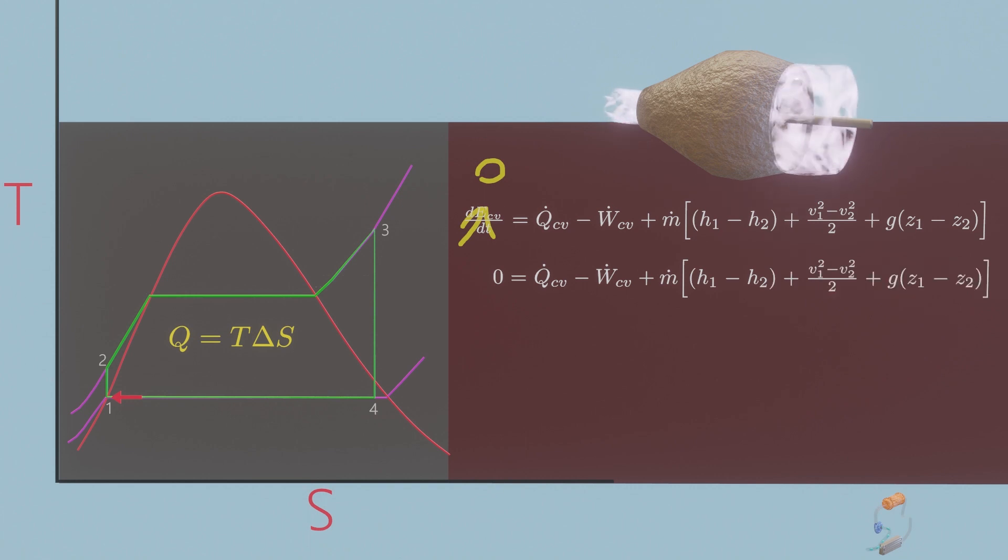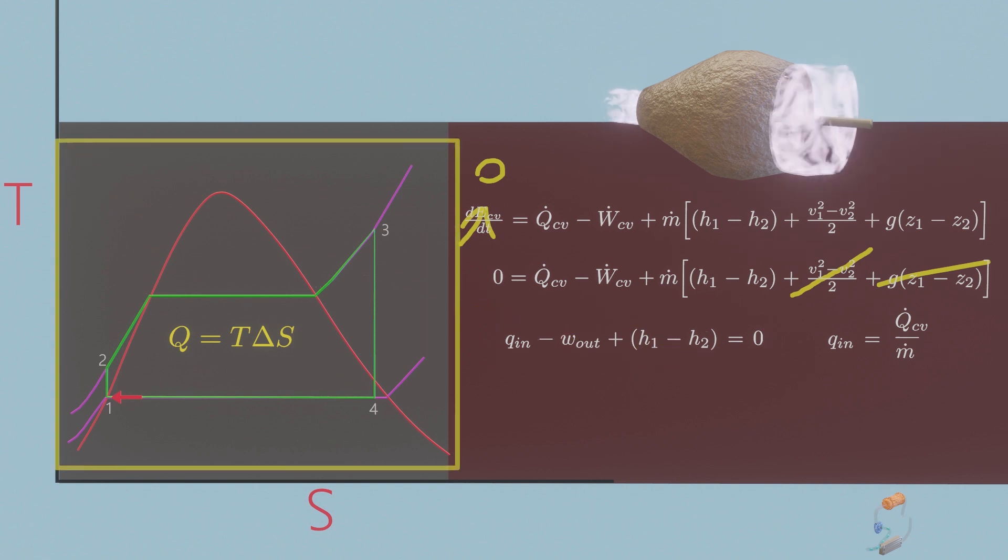With a proper selection of the control volume and closing a stream, the net kinetic energy of the matter flowing across the boundary is usually small enough to be neglected. The net potential energy of the flowing matter also is typically negligible. Thus, these terms drop out, leaving the power, enthalpy, and heat transfer terms. This equation is obtained when we divide steady equation by mass flow rate. Now using this steady equation in the diagram, you can find work done by any steady devices.